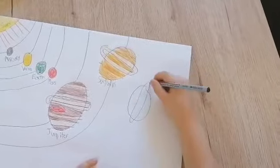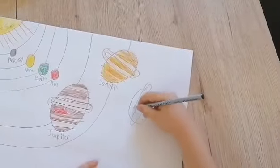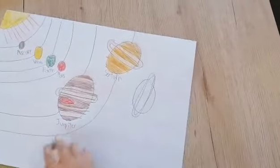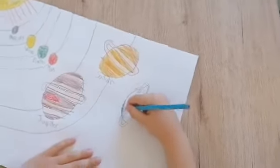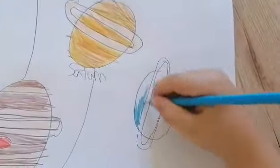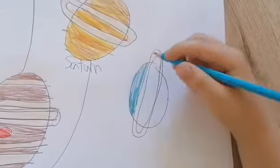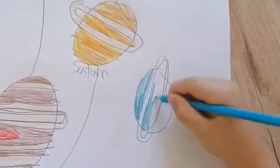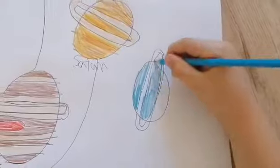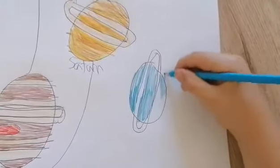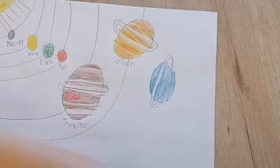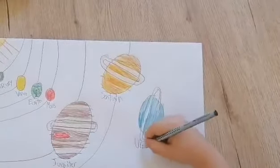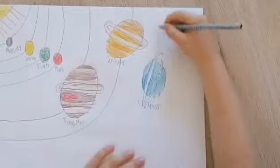So there, and then write the name Saturn. Now we go to Uranus. Now Uranus is actually lying on its side, and it actually has 13 rings. And the rings don't have any color, so I'm just gonna color it in white. Since the paper is white as well, I'm just gonna leave it that way. There, that is Uranus.